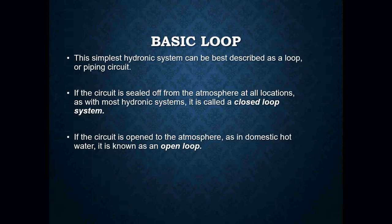The simplest hydronic system is best described as a loop or piping circuit. I use this analogy even when talking about basic electricity — you can use the same concept for both. An electrical circuit is nothing more than a gigantic loop with a beginning and ending point that continues to circle until it stops. A hydronic system is exactly that — a gigantic loop.